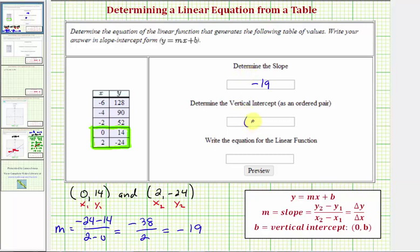So we want to enter open parenthesis, zero comma fourteen, close parenthesis. Notice how we're asked to enter the vertical intercept as an ordered pair.